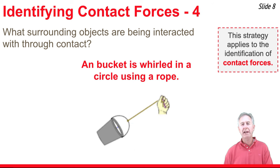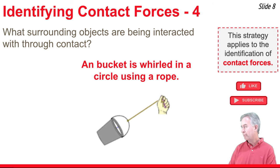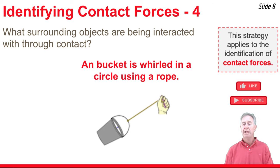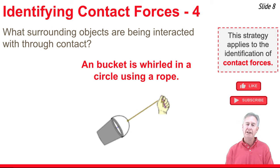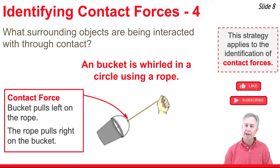In our fourth example, we have a bucket being whirled in a circle using a rope. We have to find the contact forces acting upon the bucket, so we ask what surrounding objects it's interacting with. There's a hand in the picture, but the bucket is not touching the hand, so there's no interaction there. The bucket is touching the rope — that's where the contact force comes from. As it spins in a circle, the bucket has a natural tendency to fly outward, so it pulls leftward and downward upon the rope, and the rope pulls upward and rightward upon the bucket.